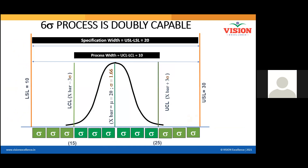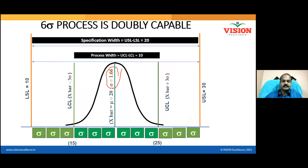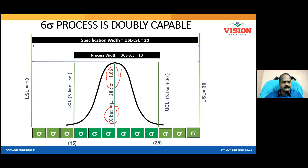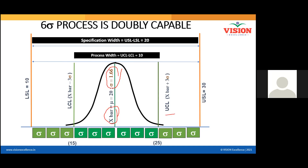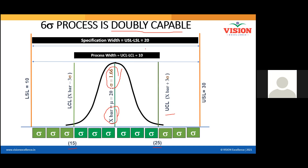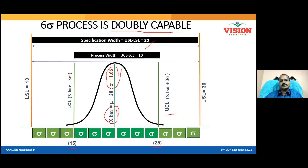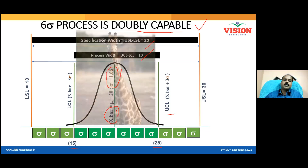If you don't want these problems to happen in your business, keep an eye on your standard deviation in addition to the average. With a new standard deviation of 1.66, the new control limit is 25 on the right and 15 on the left. Now this process is called 'doubly capable' — the customer gave a tolerance of plus or minus 10, making the total tolerance 20, but my process has used only half of it.